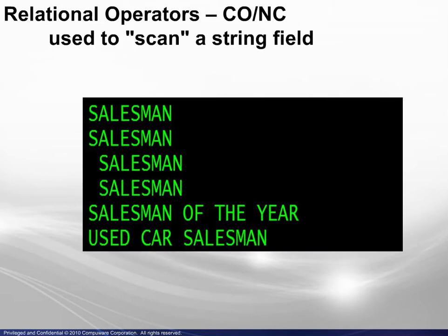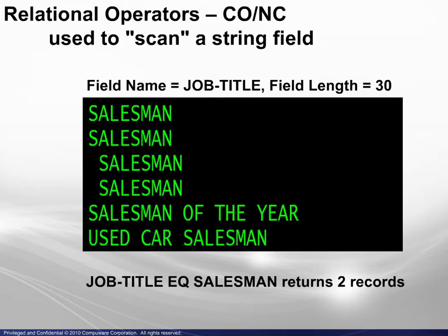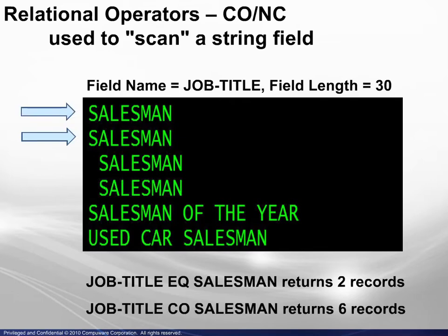The contains and not contains operators are used to scan a string field for the presence or absence of a specified set of characters. In this example, the field is Job Title with a length of 30 characters. The equal operator searches for the string Salesman with no trailing characters, left justified in the field, and the search returns two records. The contains operator searches for the string Salesman to appear anywhere within the field, and this search returns all six records.